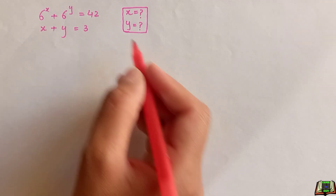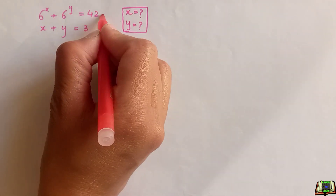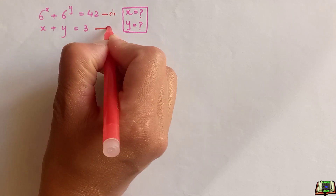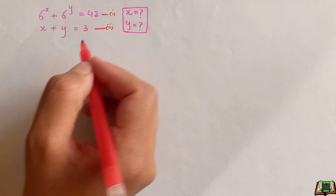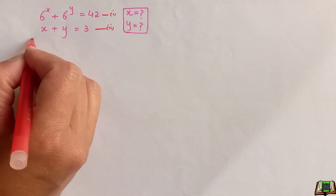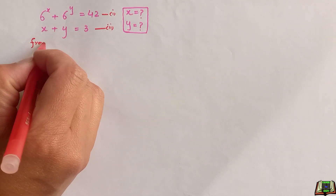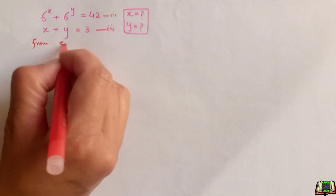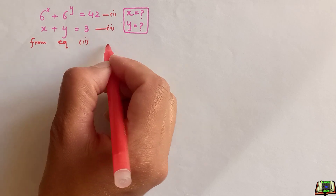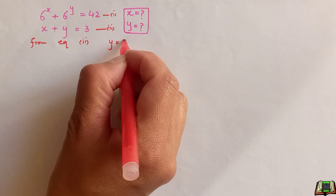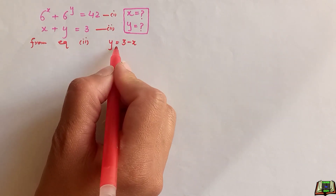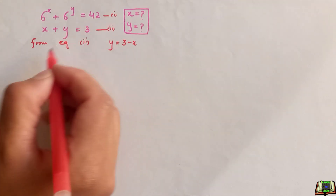Let's get started and see the solution. Let's name these equations as equation 1 and equation 2. Using equation 2, we can say that y is equal to 3 minus x, and we are going to put this value of y in equation 1.